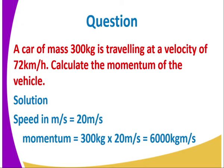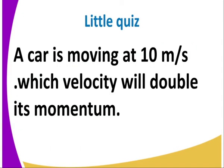72 kilometers per hour is equivalent to 20 meters per second. From our formula, momentum equals mass times velocity: 300 kilograms multiplied by 20 meters per second, which gives us a total of 6,000 kilogram meters per second.